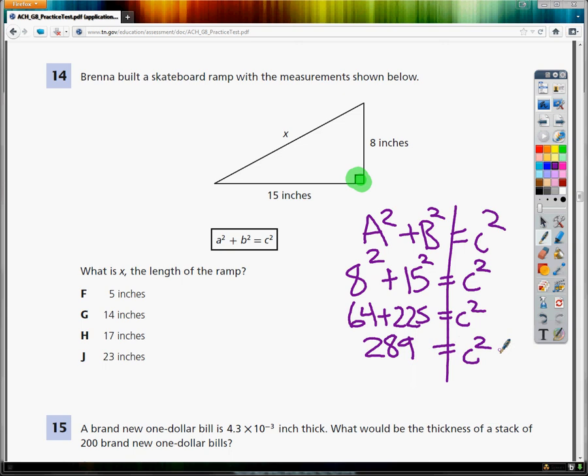Now I'm almost done. I've got C² = 289, which is great, but not really as helpful as I need it to be. I need to get rid of that square.